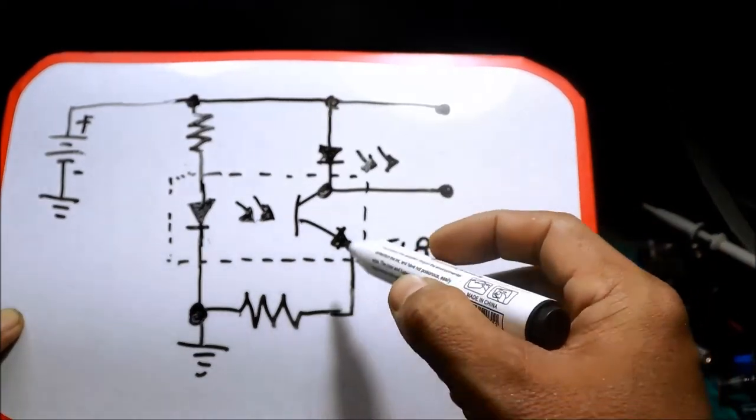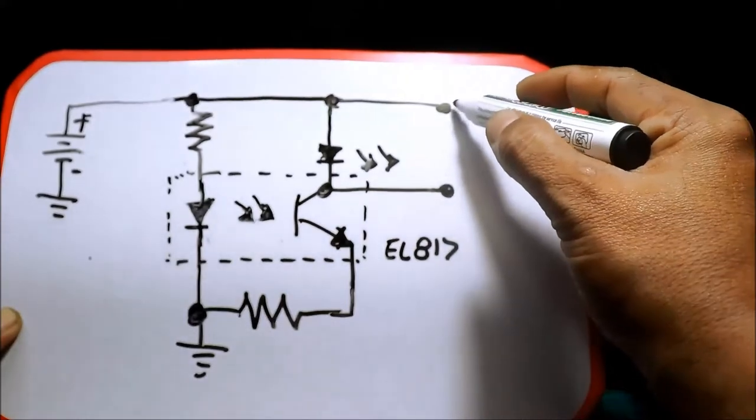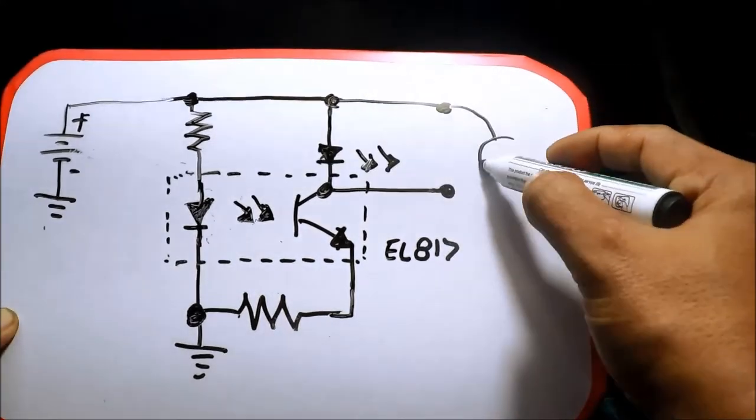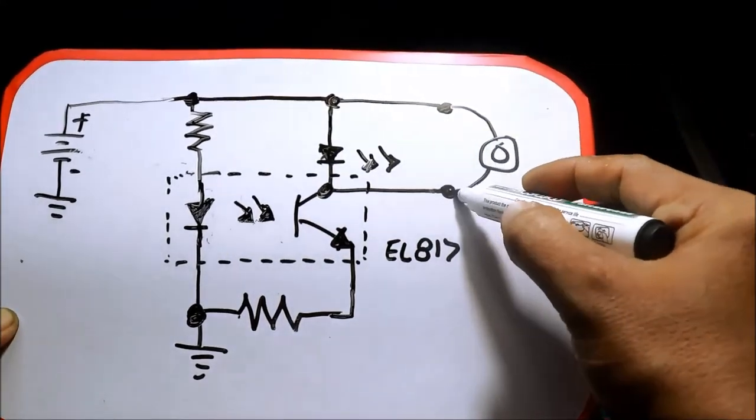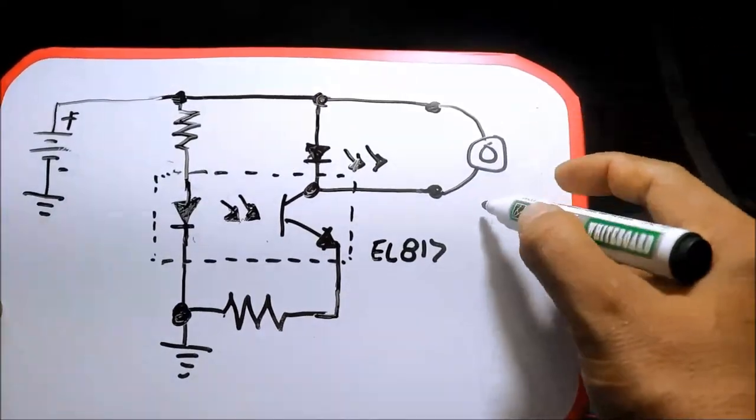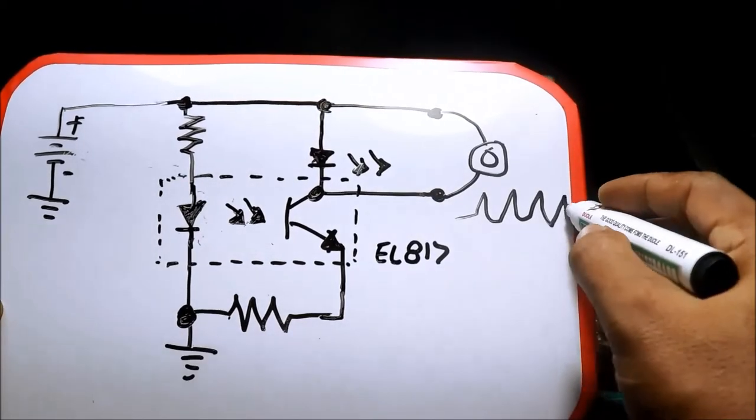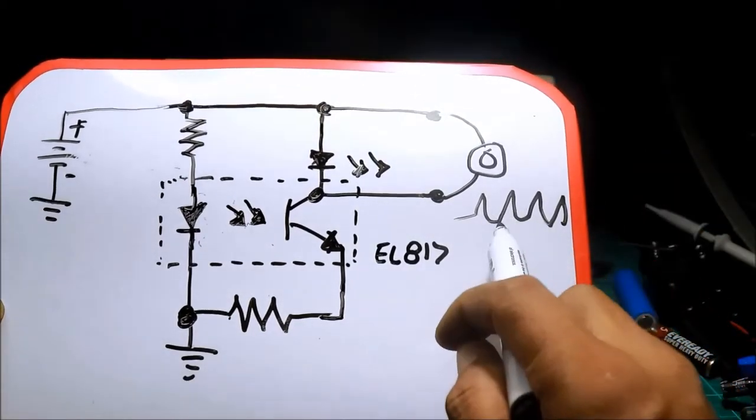Ito yung pinaka-circuit diagram niya. Dito tayo naglagay ng oscilloscope. So yun yung waveform niyo. Parang ganyan, diba? Pulsating.